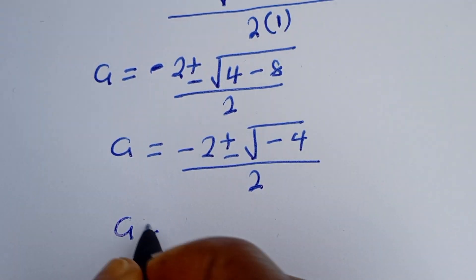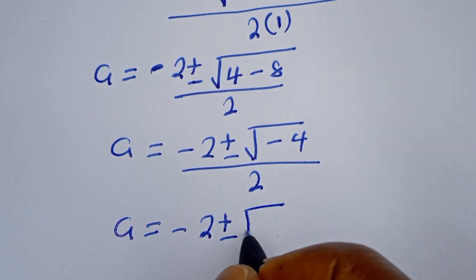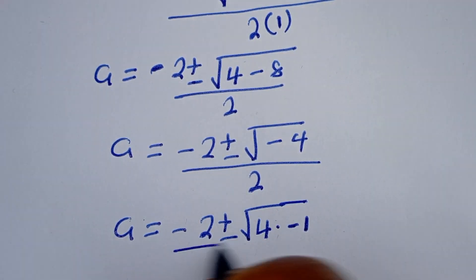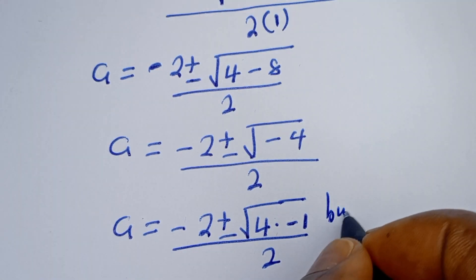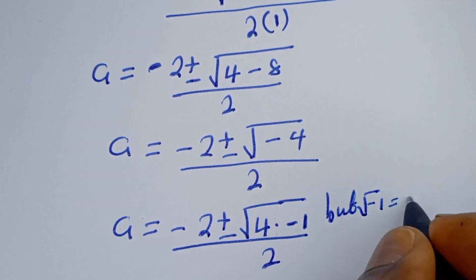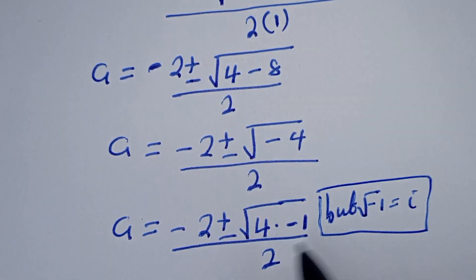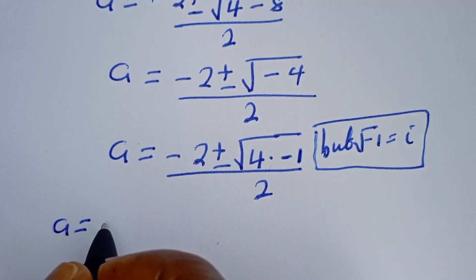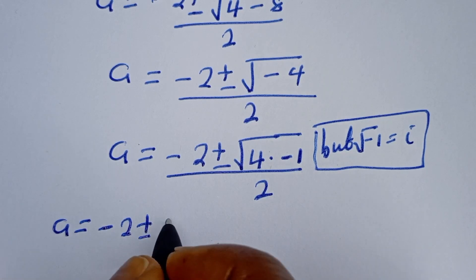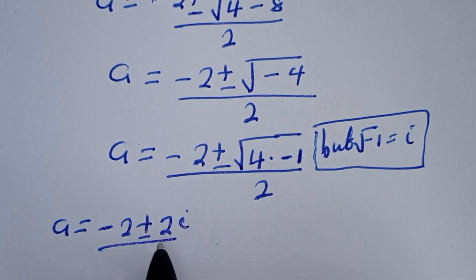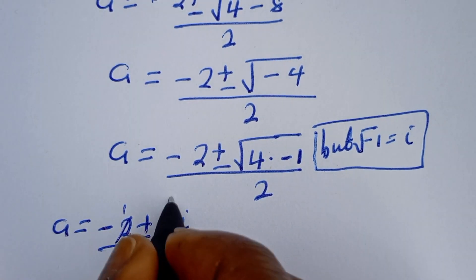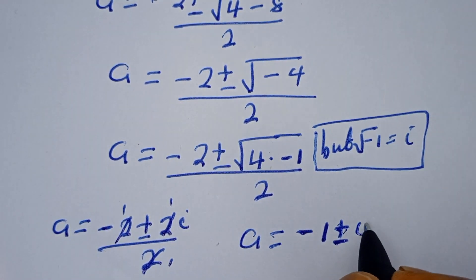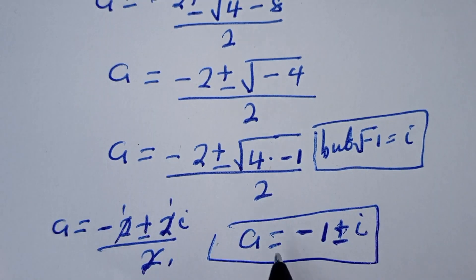This is a equal to minus 2, plus or minus square root of minus 4, which can be written as 4 times minus 1. So we get a is equal to minus 2, plus or minus 2i, over 2. Therefore, a is equal to minus 1 plus or minus i, from the first case.